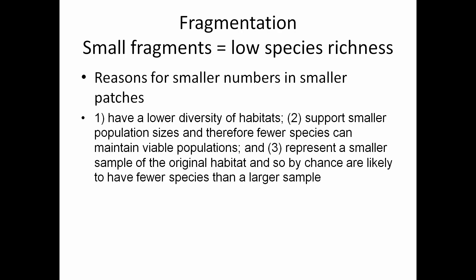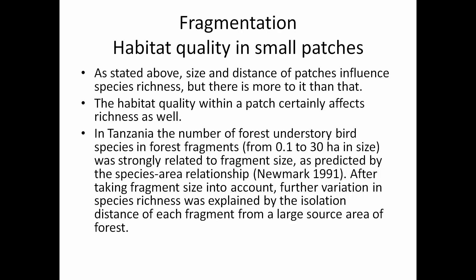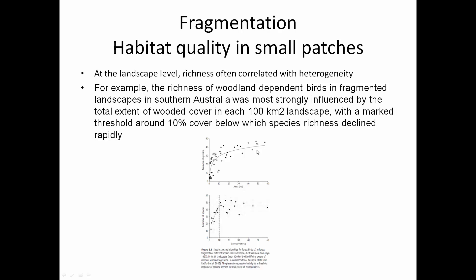Small fragments lead to low species richness. Three key reasons: lower diversity of habitat supports smaller population sizes, so fewer species can maintain viable populations; and a small fragment represents a smaller sample of the original habitat, so by chance it's likely to have fewer species. In Tanzania, forest understory bird species in fragments from 0.1 to 30 hectares was strongly related to fragment size, but after 30 hectares it didn't seem to make any difference. So there is a threshold value these species need to maintain population and number of species.